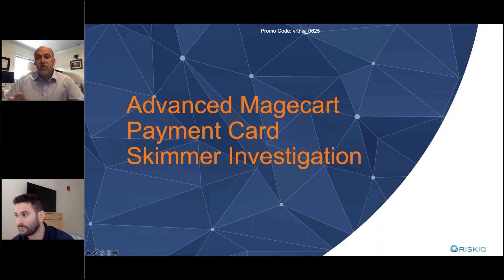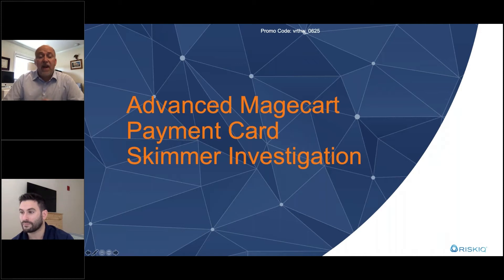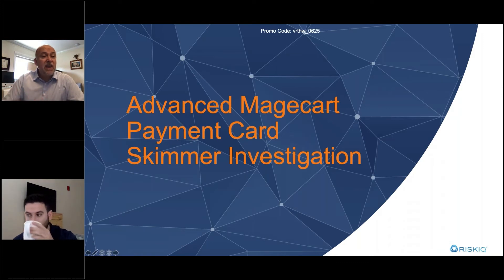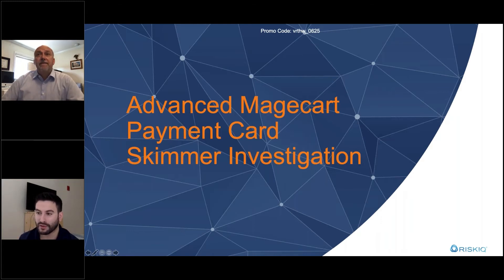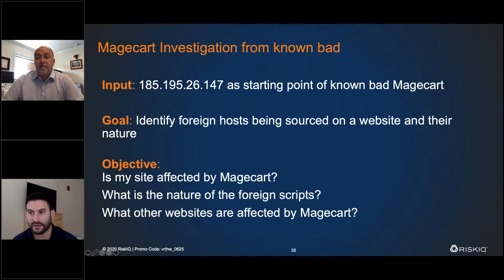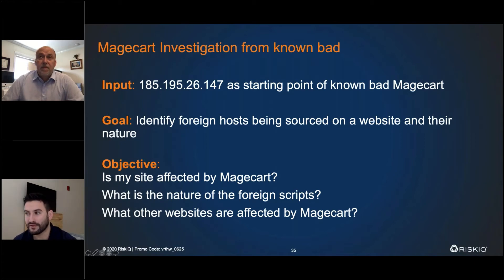The first starting point for the investigation is IP address 185.195.26.147. Links to all the tools and the first initial query have been posted in the GoToWebinar chat. As Orr goes through this, you can run the query yourself and follow along. In Passive Total, this IP address was first viewed in March 2018 and as recently as June 4th, with one potential indicator being that it's based in Russia. The heat map shows resolutions per day, with each orange marker representing a new unique resolution identified.